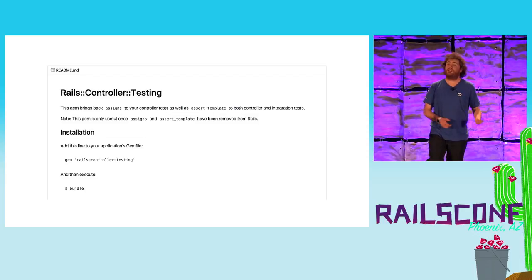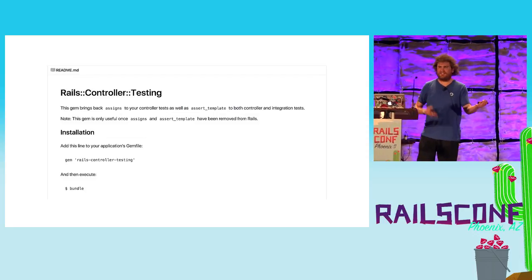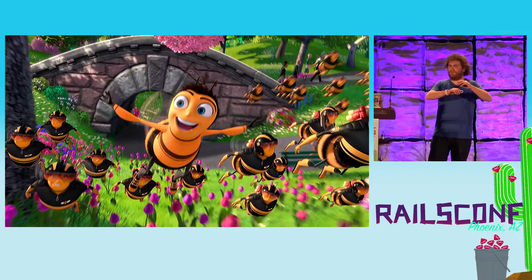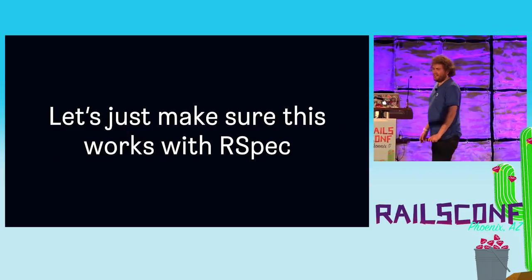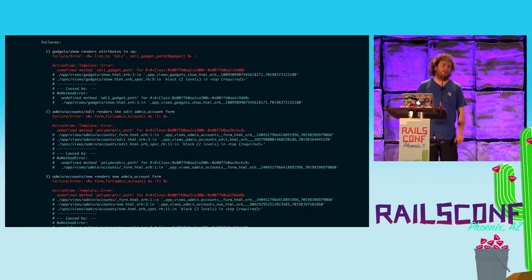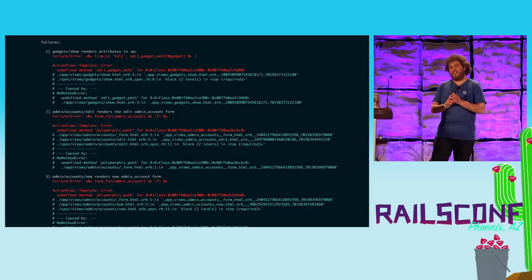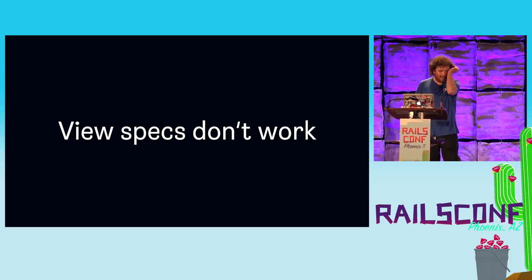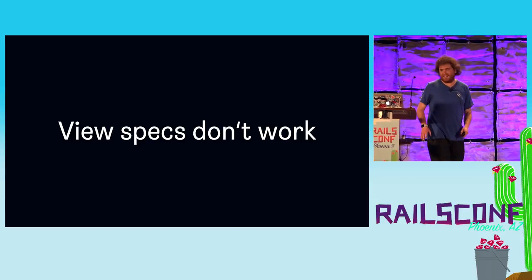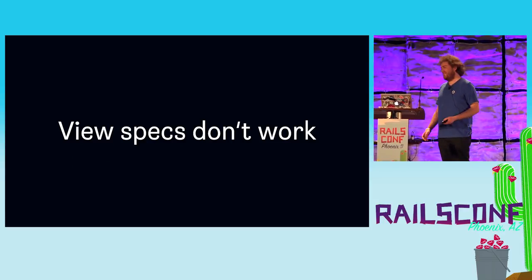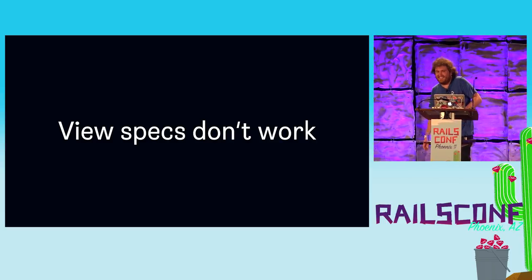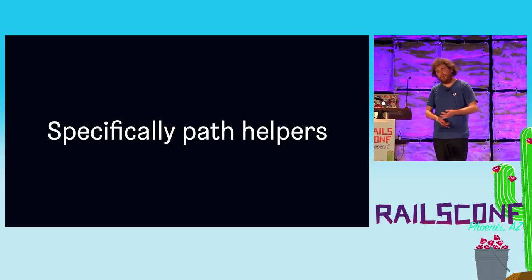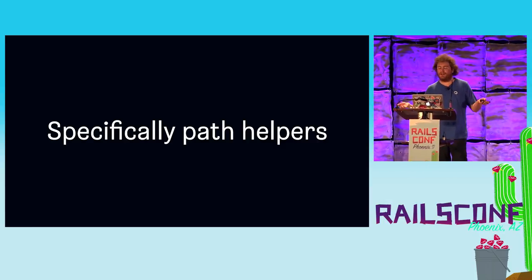I was overreacting because it turns out the Rails team had a plan, which was this gem called rails-controller-testing. All the rails-controller-testing gem does is provide assigns and assert_template again. And so I'm like, great, this is perfect — I'll just integrate this back into RSpec, we'll run our tests, everything will be fine. So let's add it, make sure it works, and oh no — the entire test suite exploded. Looking at this a little bit closer, we discover that actually it's just view specs that have stopped working. And specifically the thing that was broken is path helpers — things like url_for, gadgets_path, user_path, et cetera.